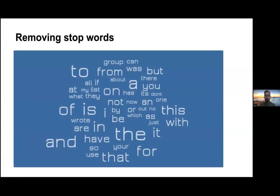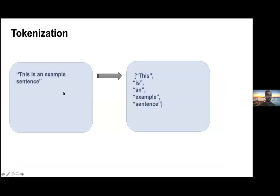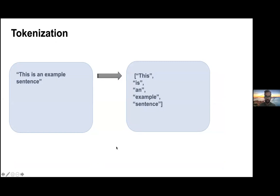Removing stop words: words like 'to', 'from', 'was', 'about', 'on', 'off', 'is' are repeated so much in text that their frequency becomes very high and they gain undue importance. It's best to eliminate these words, as they don't really add meaning to your sentence but act as redundant noise. Tokenization is then breaking down a sentence into tokens — for example, 'This is an example sentence' becomes individual tokens: 'This', 'is', 'an', 'example', 'sentence'.